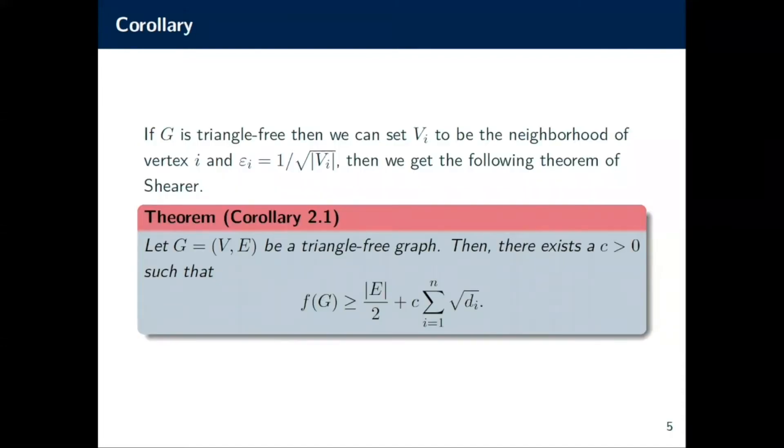In the special case of a graph being triangle-free, we can actually set V_i to be the entire neighborhood of the vertex i, and epsilon_i to be equal 1/√|V_i|. What we get then if we plug it into the previous Theorem 1.1 is that f(G) has to always be greater than |E|/2 plus some constant c times the sum of the root of the degree. And this was a known result of Shearer.